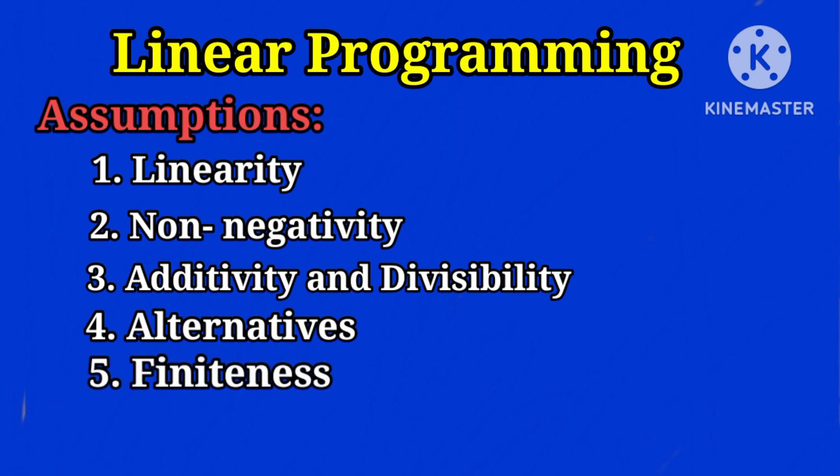The next one is finiteness. Activities, resources, and constraints should be finite and known. The next is certainty, so prices and various coefficients should be known with certainty. That means prices of goods and factors remain constant.